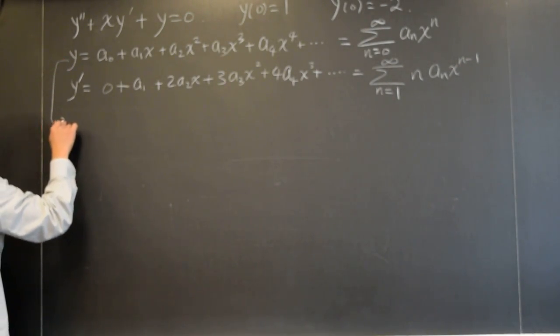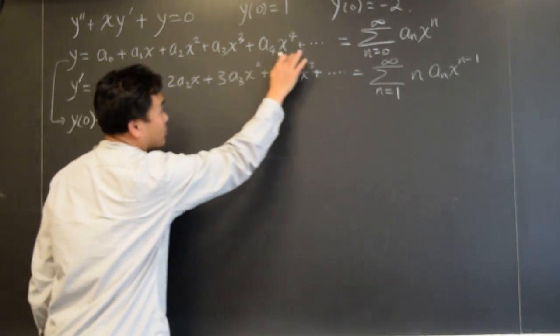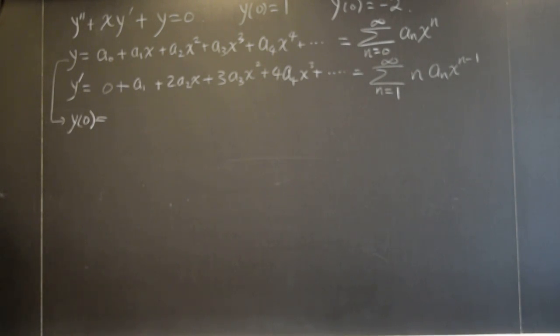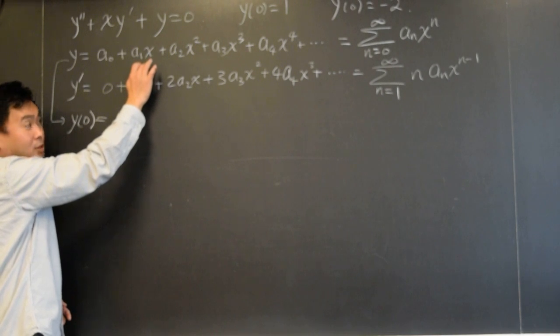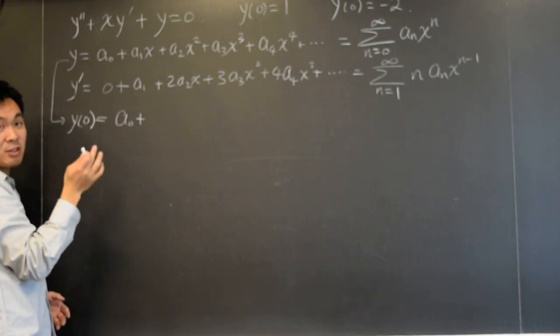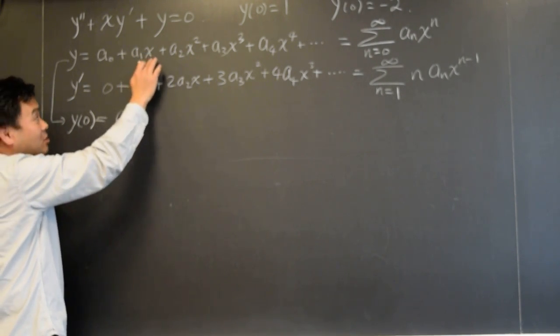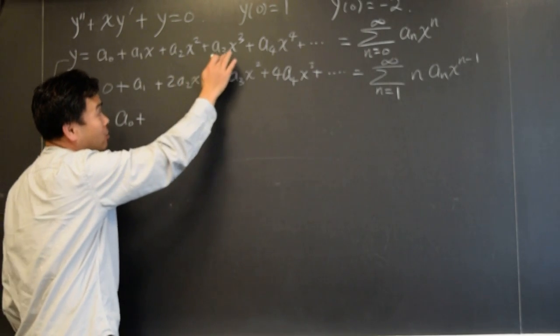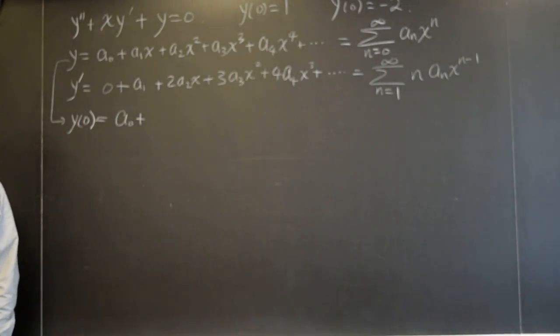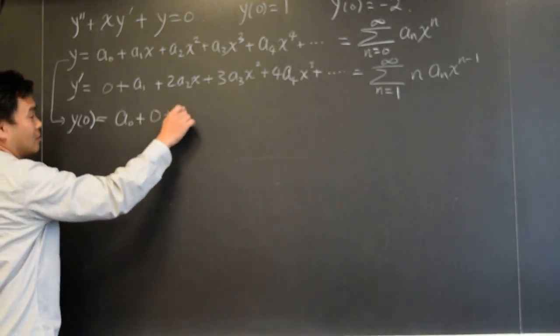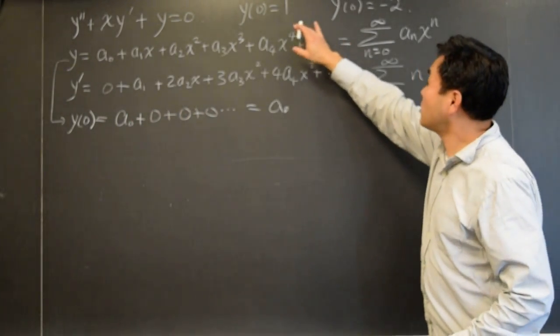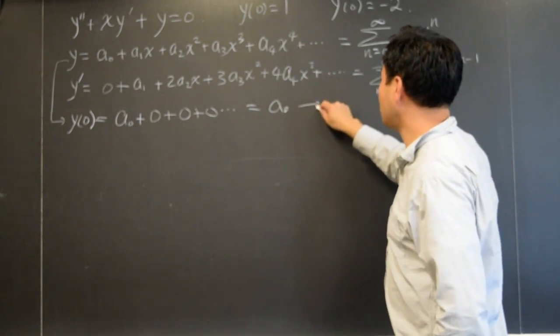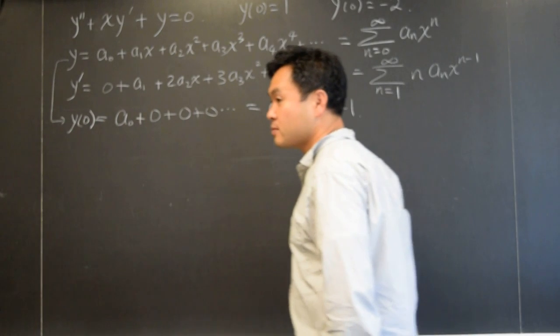According to this, if you have y and if you plug in zero into this formula here, what would you get? You'll get a zero plus a one times zero, a two times zero, a three times zero, a four times zero. So everything is zero. So you're left with just a zero, right? Now what does this condition mean then? That means a zero is equal to one.